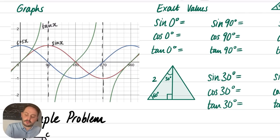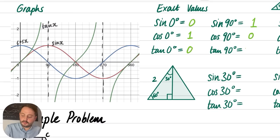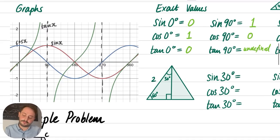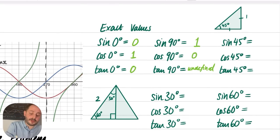Let's look at exact values using the graphs. Sine of 0 is 0, tan of 0 is also 0, and cos of 0 is 1. At 90°, sine equals 1, cos equals 0, and tan is undefined. You need to know these off by heart — knowing the shapes of the graphs really helps. The further you go through maths the more useful these exact values become.